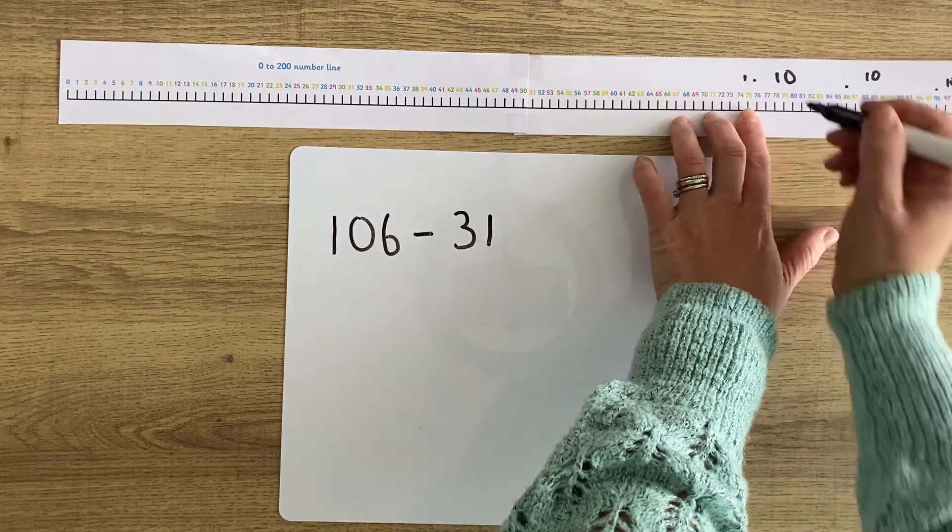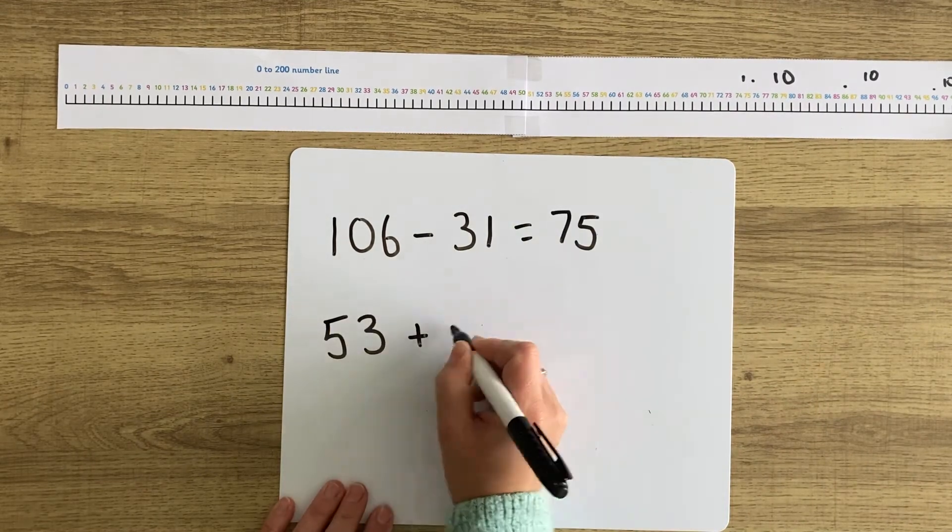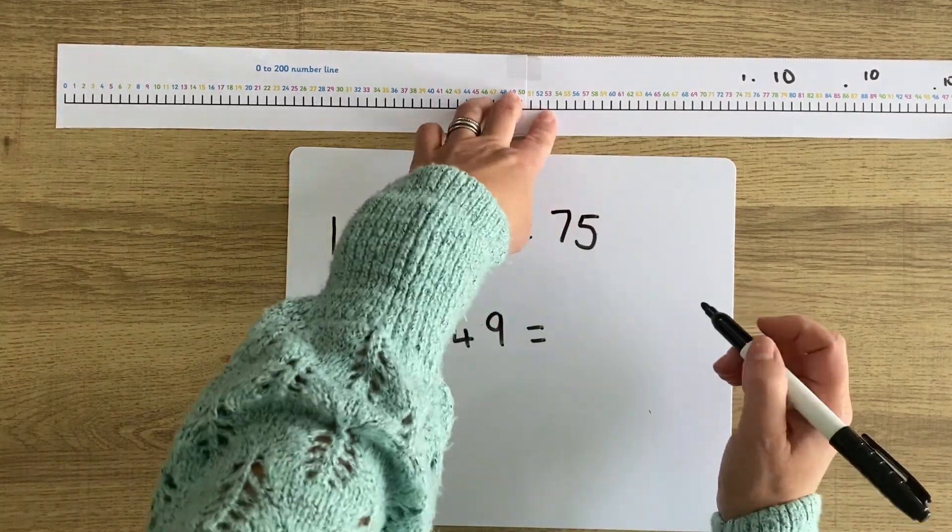Children need to be able to solve one step problems that involve addition and subtraction. Being able to use a number line to do these sums is helpful.